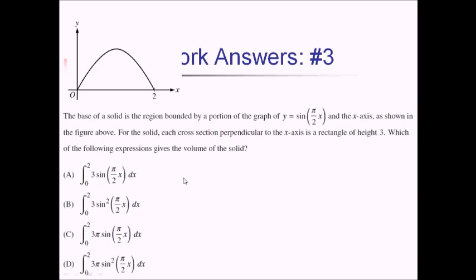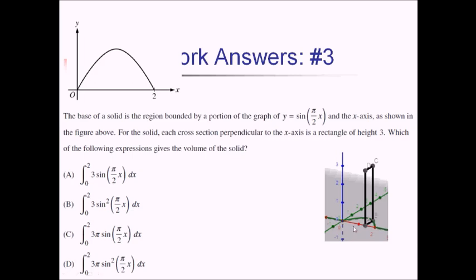Visually, here's what we've got going on. We basically have these rectangles popping out of the page. The base of these rectangles is the height of this sine function. We need to figure out the volume as we create more of these rectangles moving across the function. So I'm going to need the area of the cross-section of the rectangle — in general, that's base times height. They told us the height of these rectangles was consistently 3.